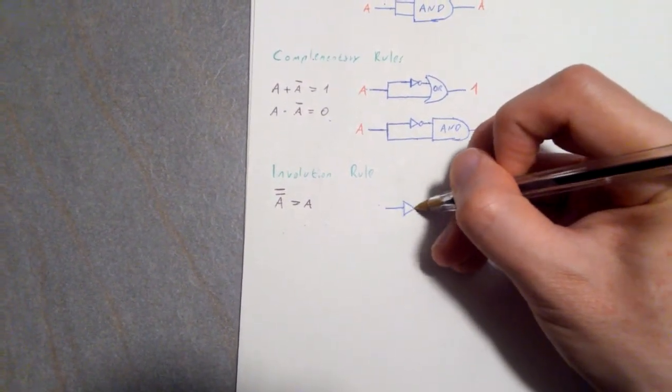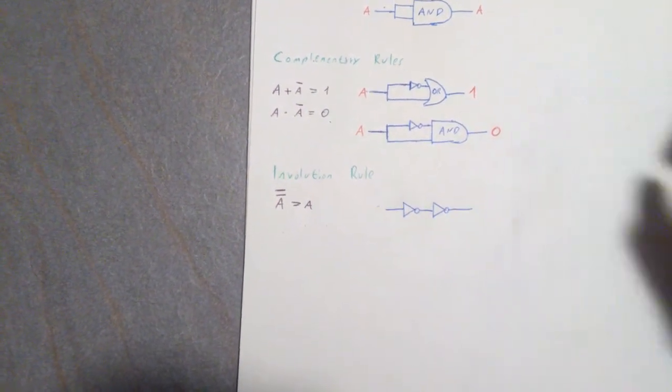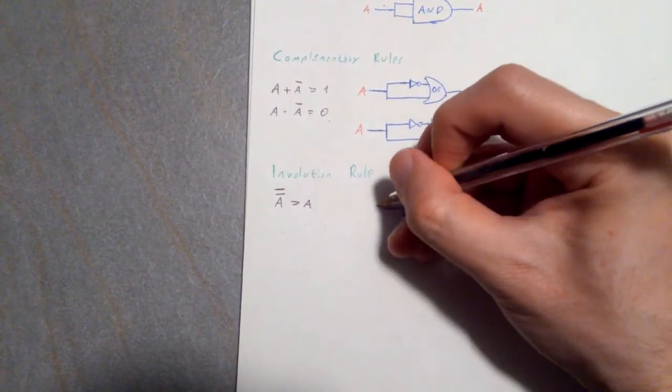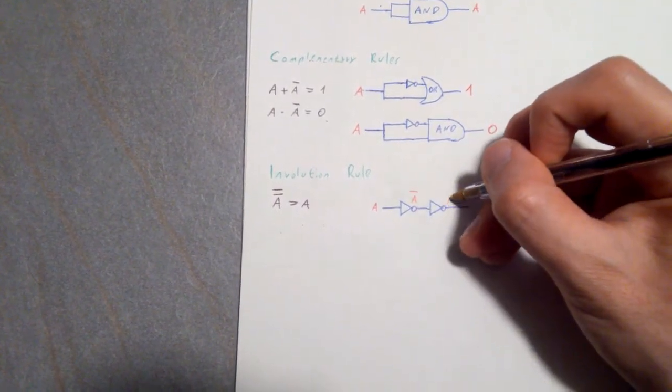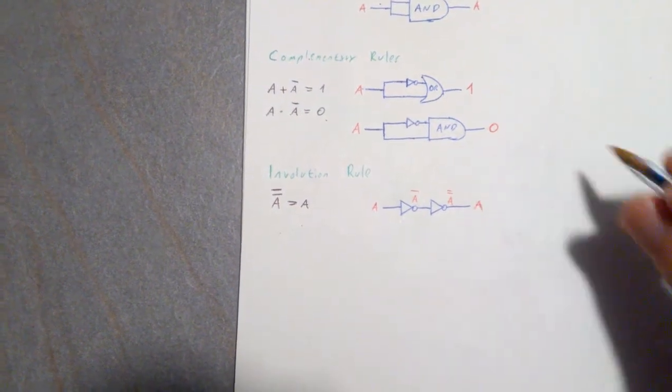So if you have an even number of NOT gates, like this, and you have A as an input, here you're gonna have a NOT, here you're gonna have a double NOT, which is essentially A. And it's pretty much the same.